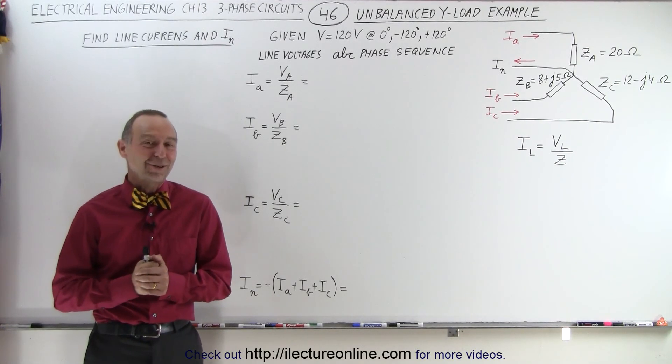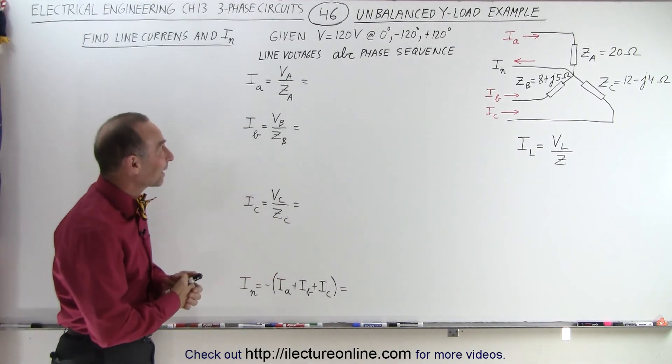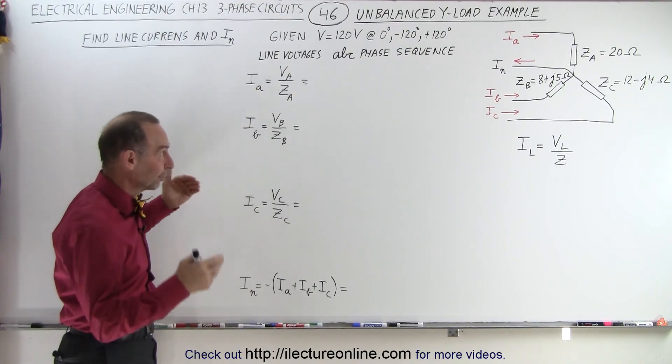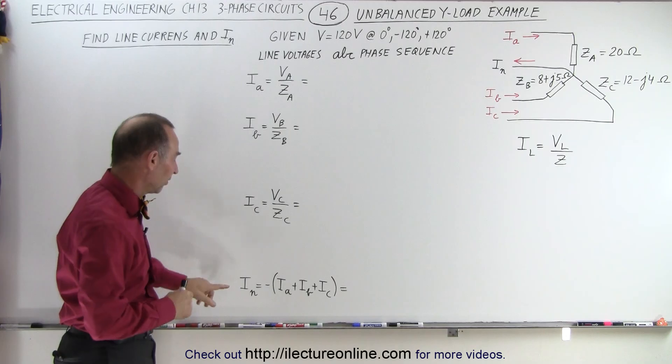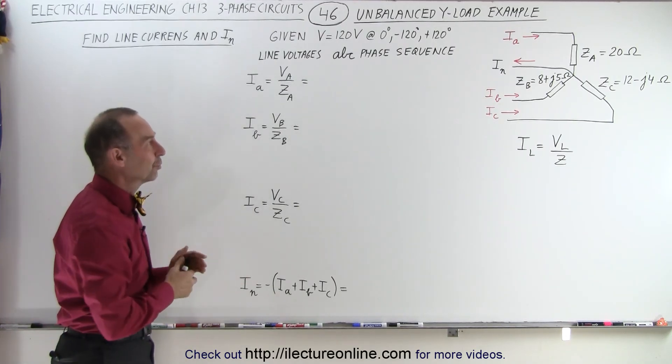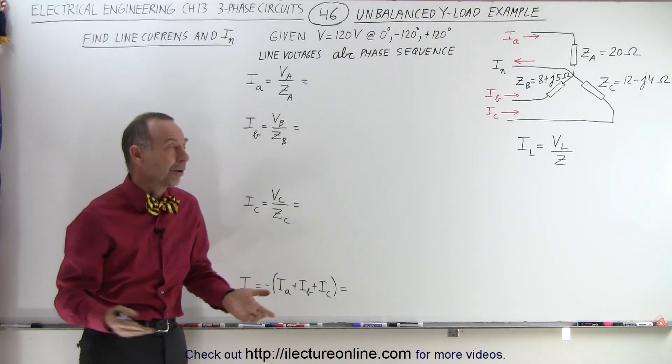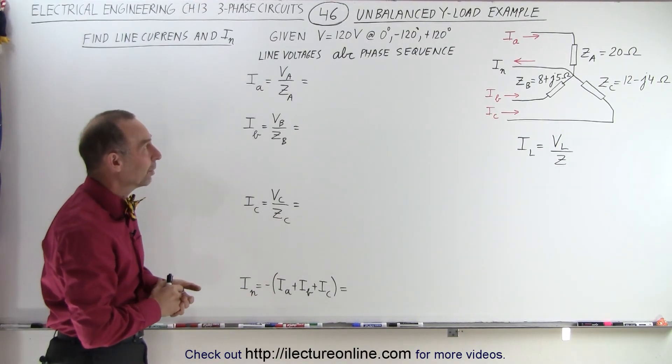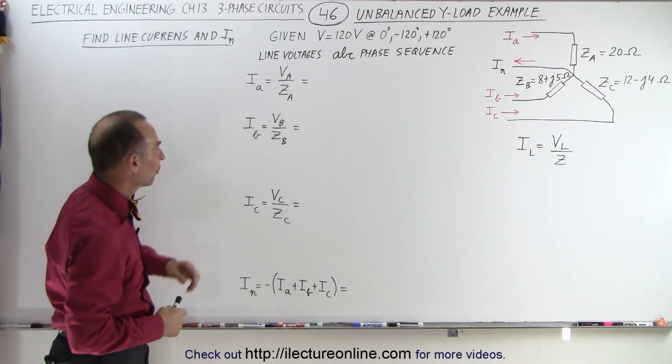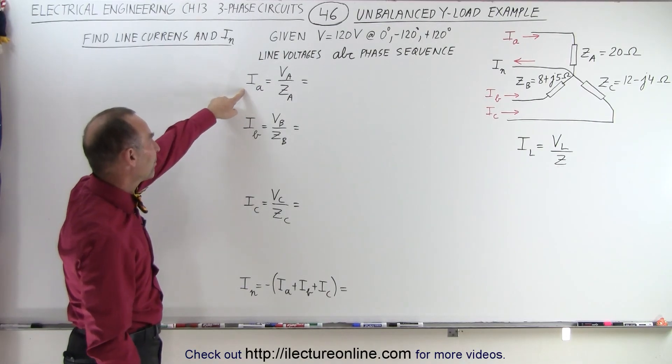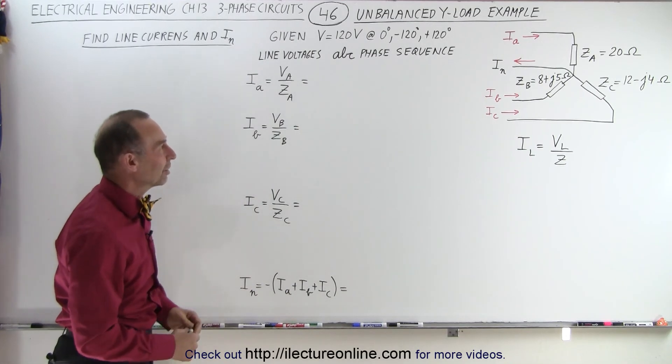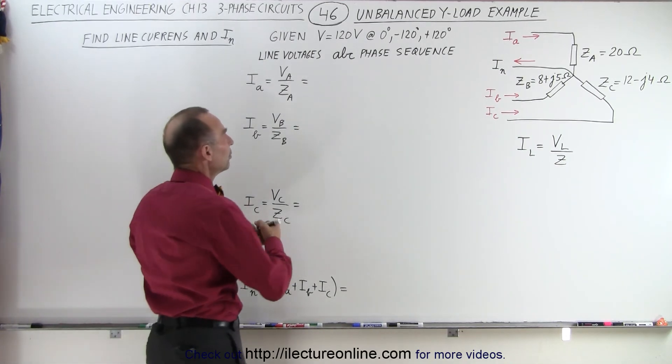Welcome to our lecture online. So here's our first example. We're going to try to calculate the currents Ia, Ib, Ic, the line currents feeding the three load impedances, and then calculate the neutral, the current coming back on the neutral, which typically should be zero, but since we have an unbalanced Y-load, it's not going to be zero, and we're trying to figure out what that is. So we know our equations, the currents can be found by taking the line voltages and dividing it by the impedance on each of the three lines. So let's go ahead and do that.